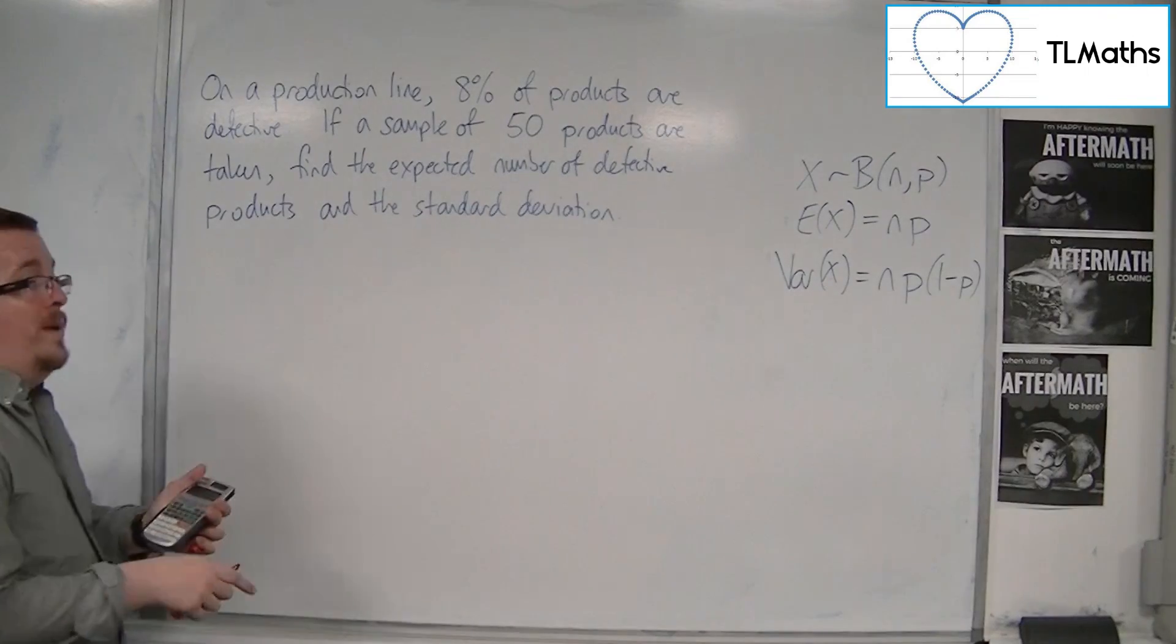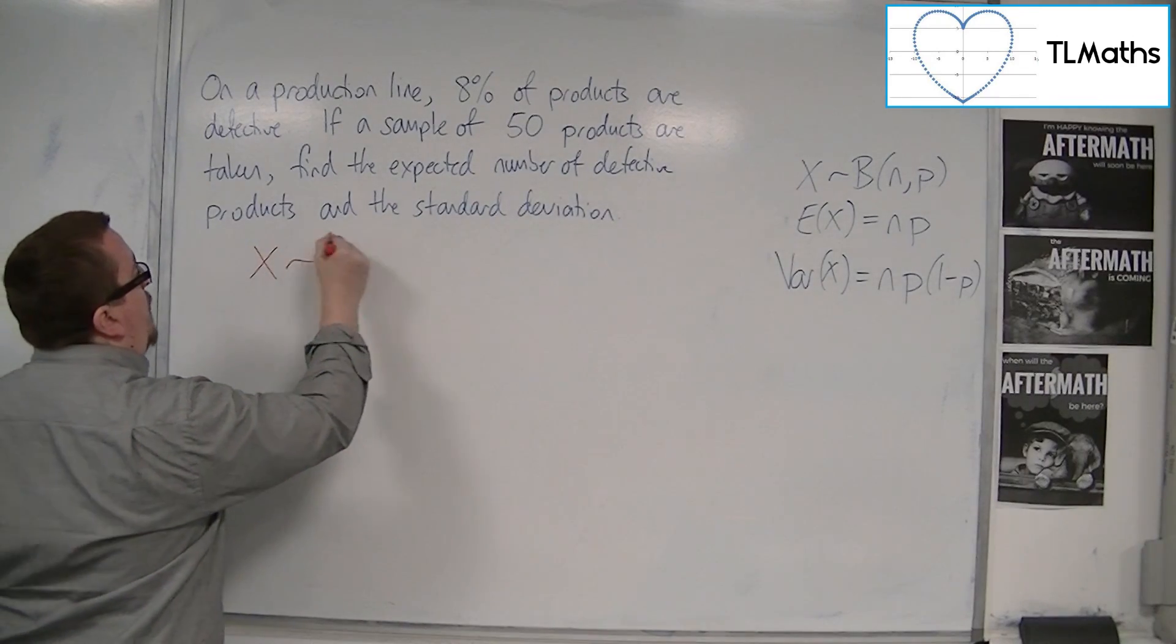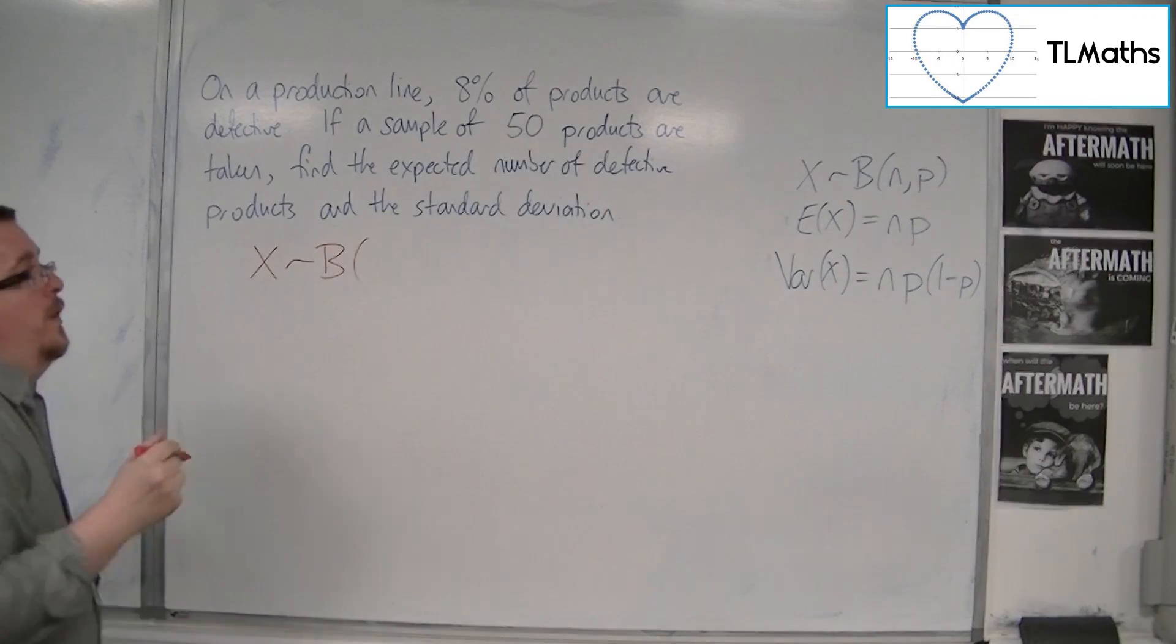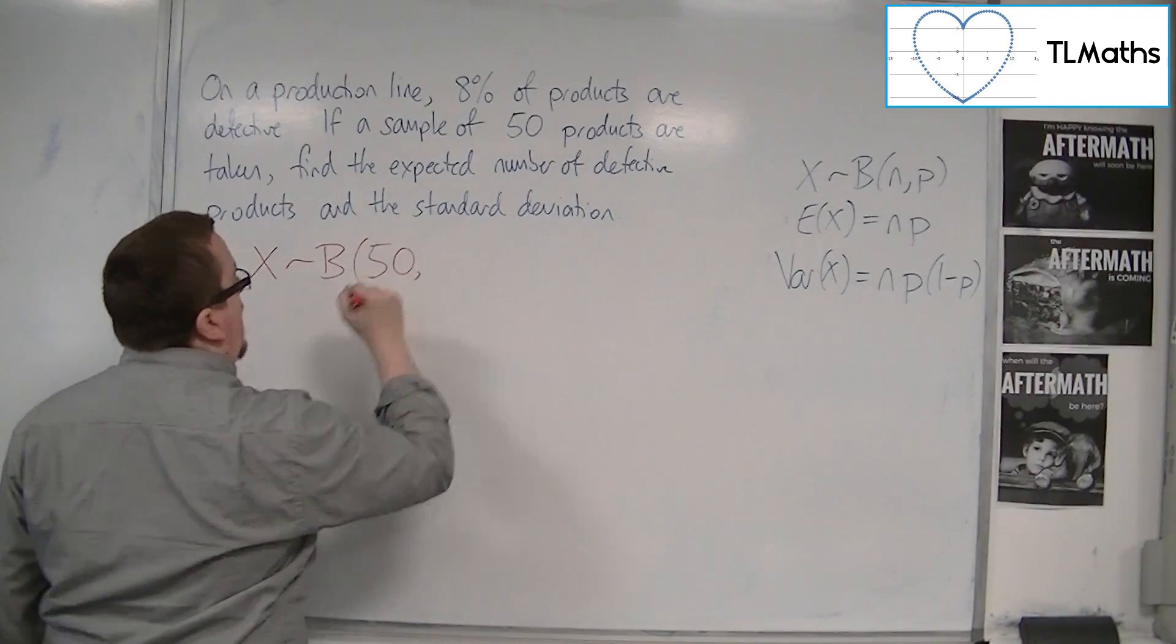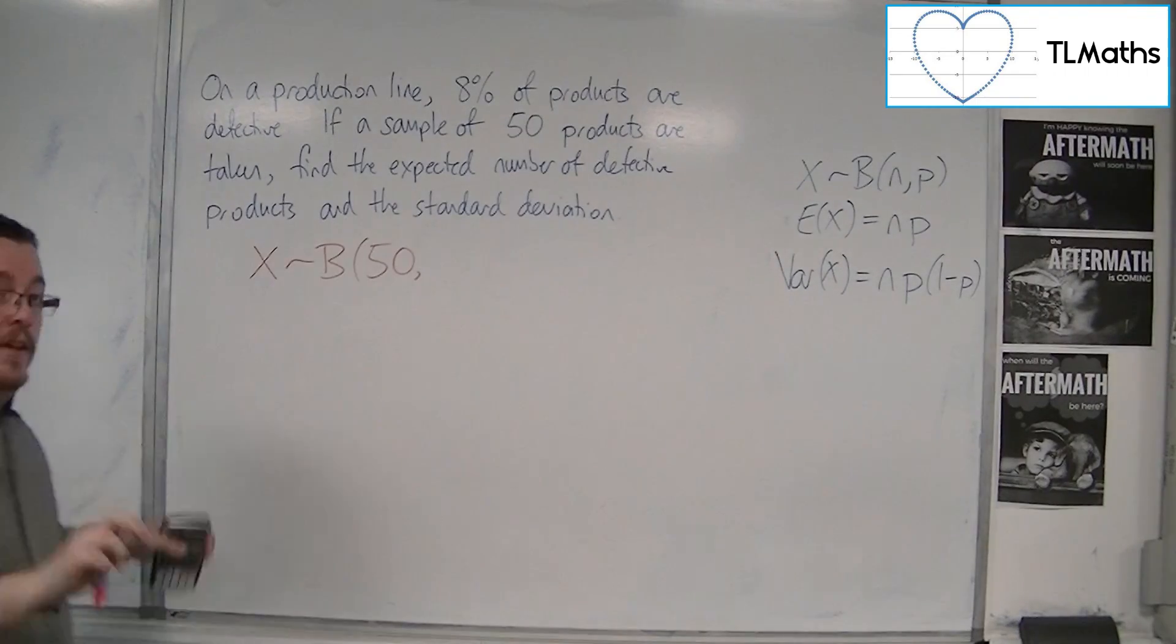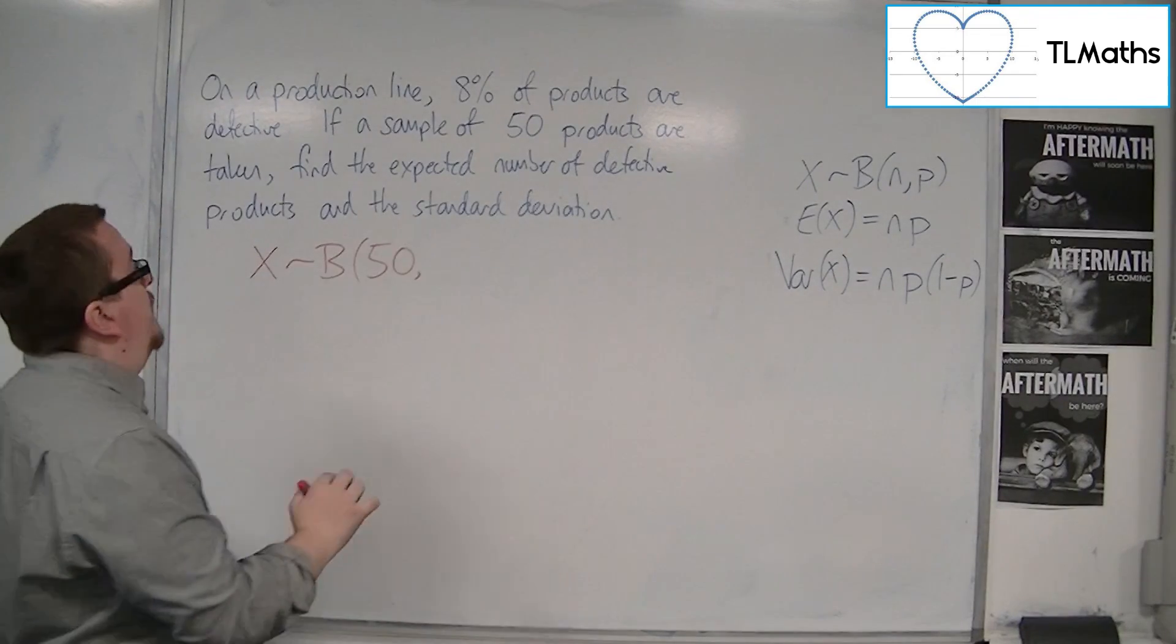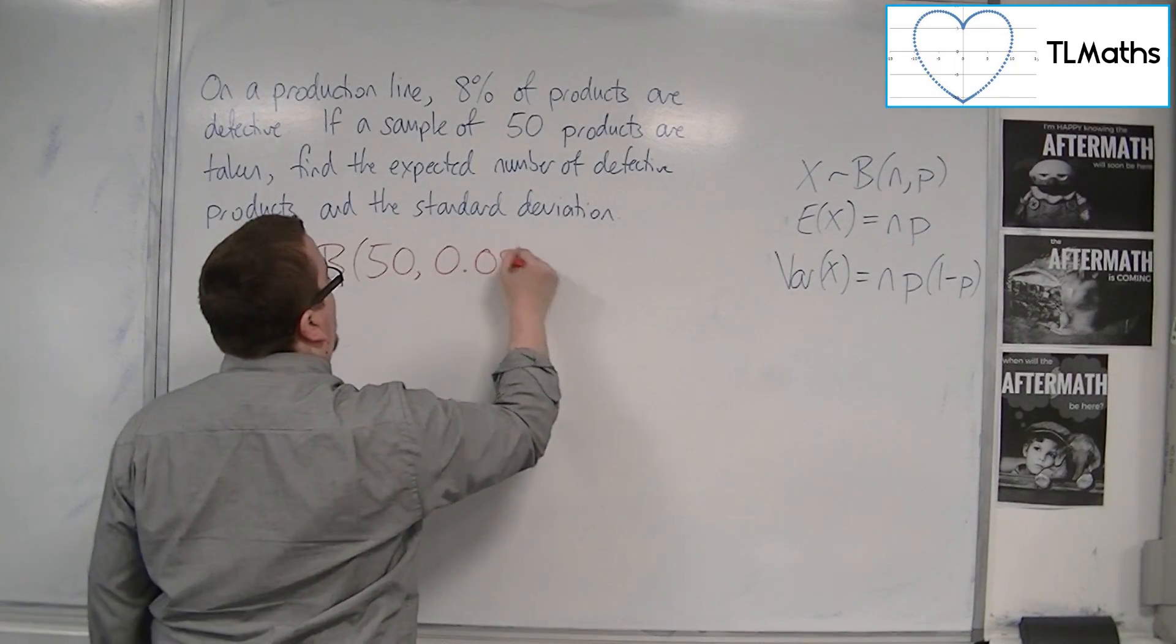So what we have is that X is a binomial distribution with N equals 50, that's the size of the sample, and the probability of success, so the probability of them being defective, is 8%, so 0.08.